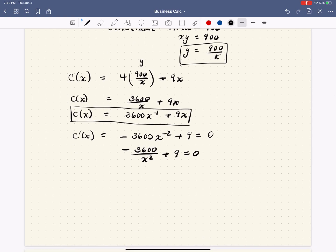And then my tip would be I'm going to add 3600 over x^2 to both sides. I'm going to multiply both sides by x^2. I'm going to divide both sides by 9. And as luck would have it, it's actually a nice answer. It looks like something happens when x is equal to 20. So this is our critical number.